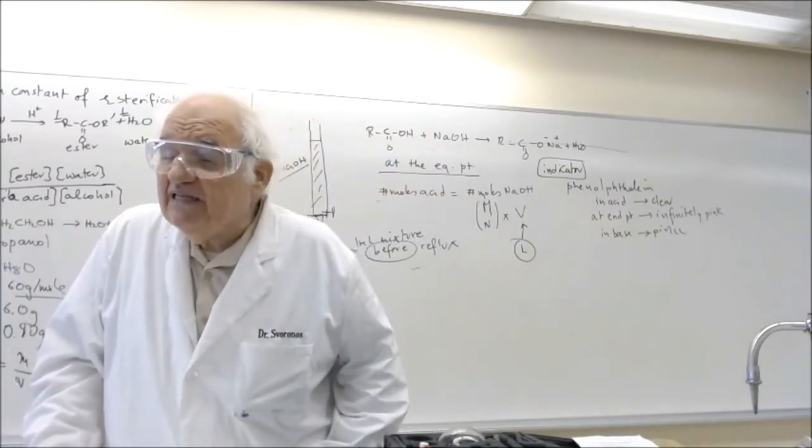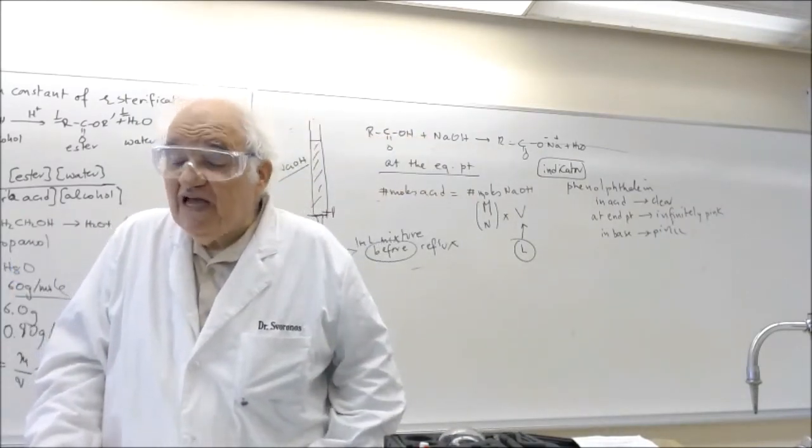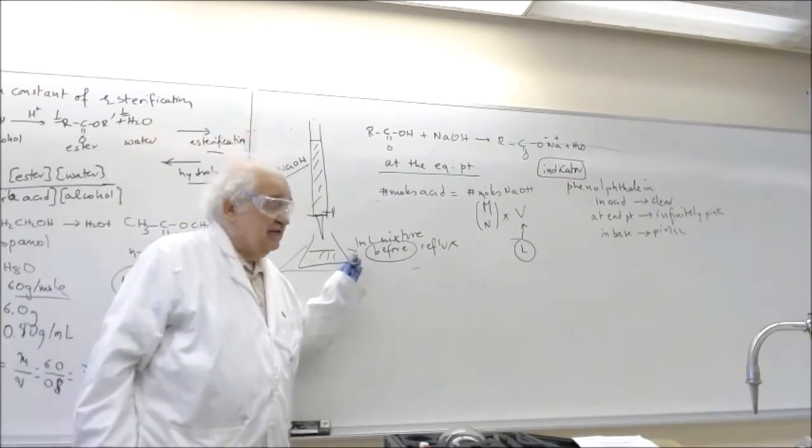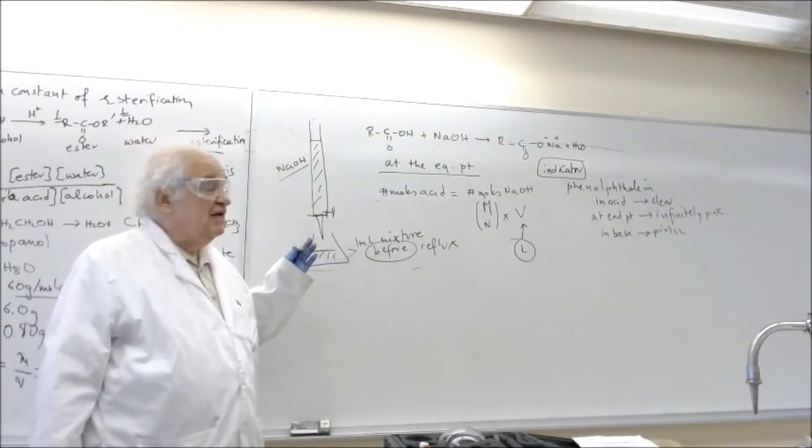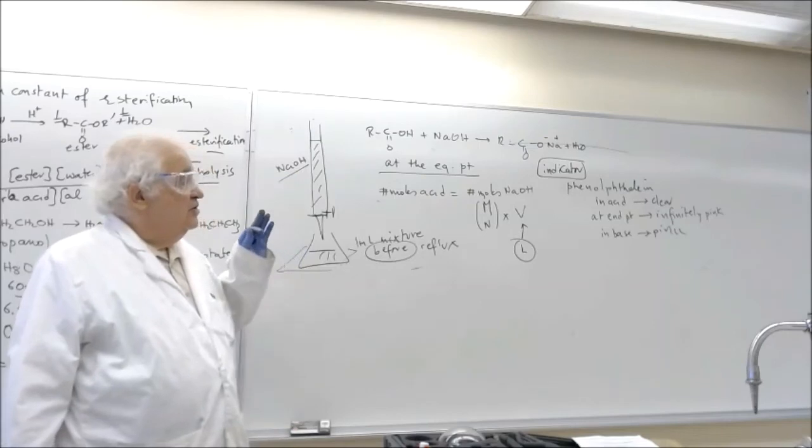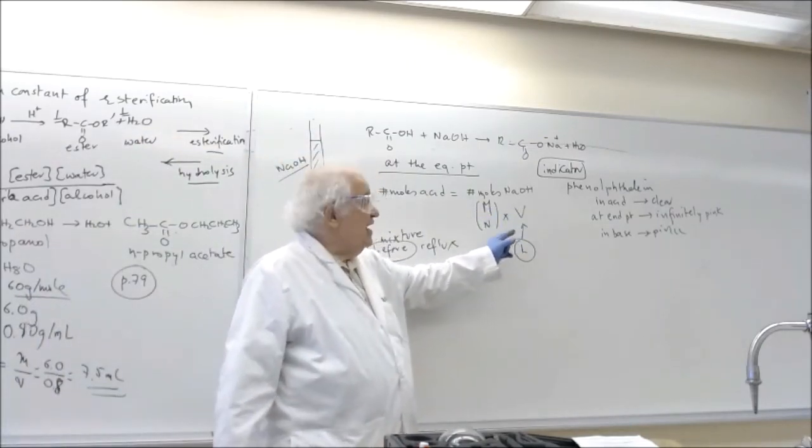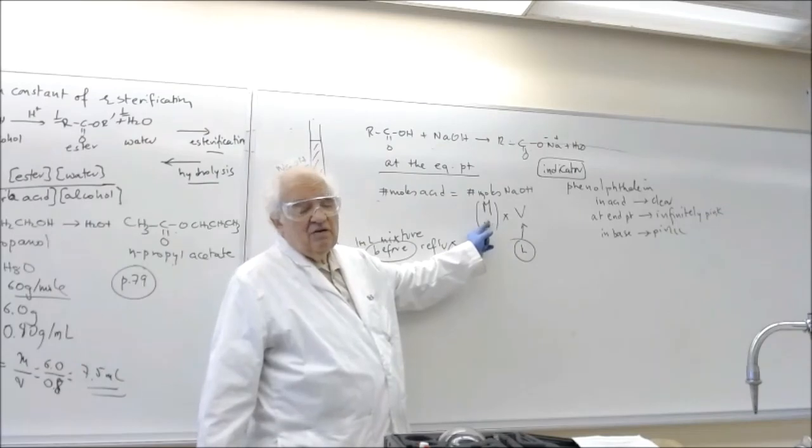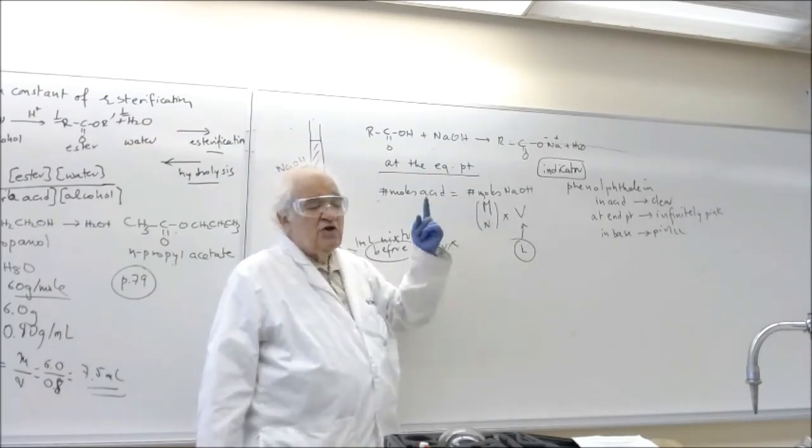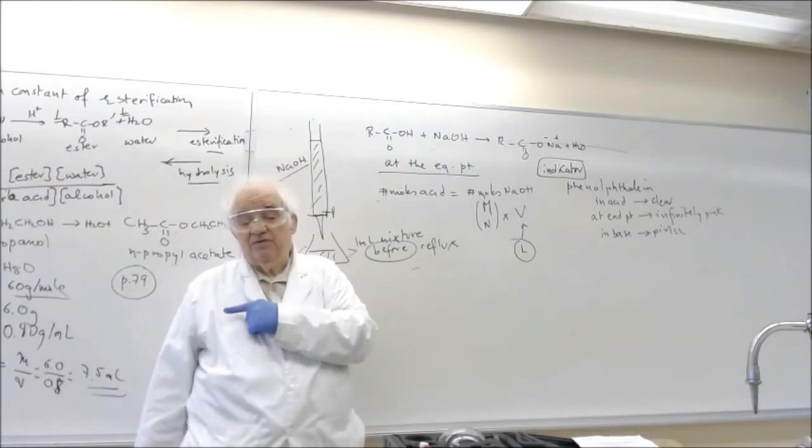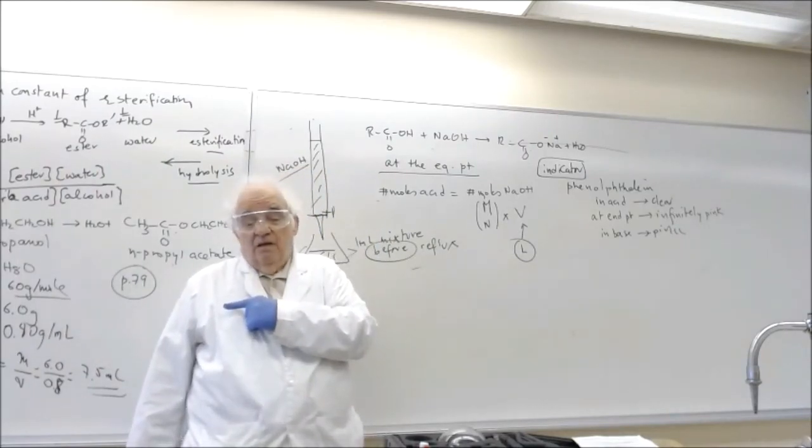When you start refluxing it, you'll have enough time to perform a titration, and you'll find out the exact volume. Knowing now the exact volume in liters, and multiply by the normality of the base, which is known, you can determine the number of moles you have in that one milliliter of the mixture.